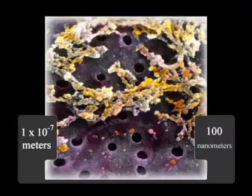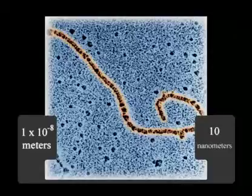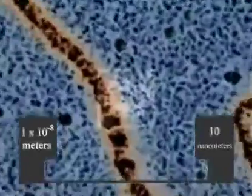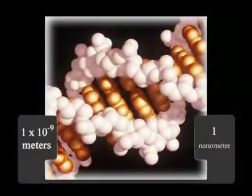And if we zoom in even further to a scale of 10 to the minus 8 meters, or 10 nanometers, or 100 angstroms, we can see a single strand of DNA, increasing our view by yet another factor of 10 in precision, in closeness to the object that we're looking at.